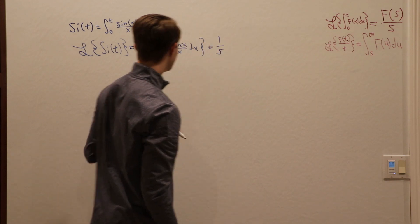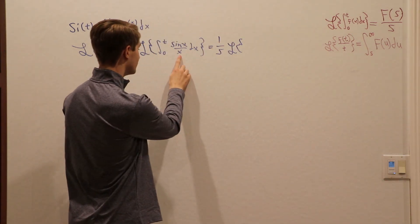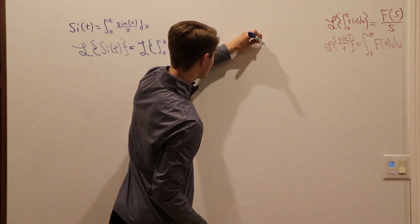In this case, we can write the 1 over s first, and then we have the Laplace transform of our inside function, which is sine of t over t.